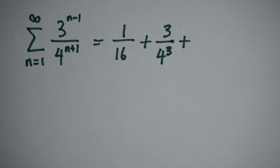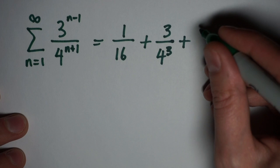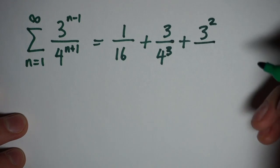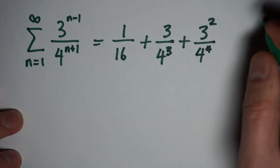When n is equal to 3, I'm looking at 3 to the 3 minus 1, so that's 3 squared, which I will leave as 3 squared. And in my denominator, I'm looking at 4 to the 4th.